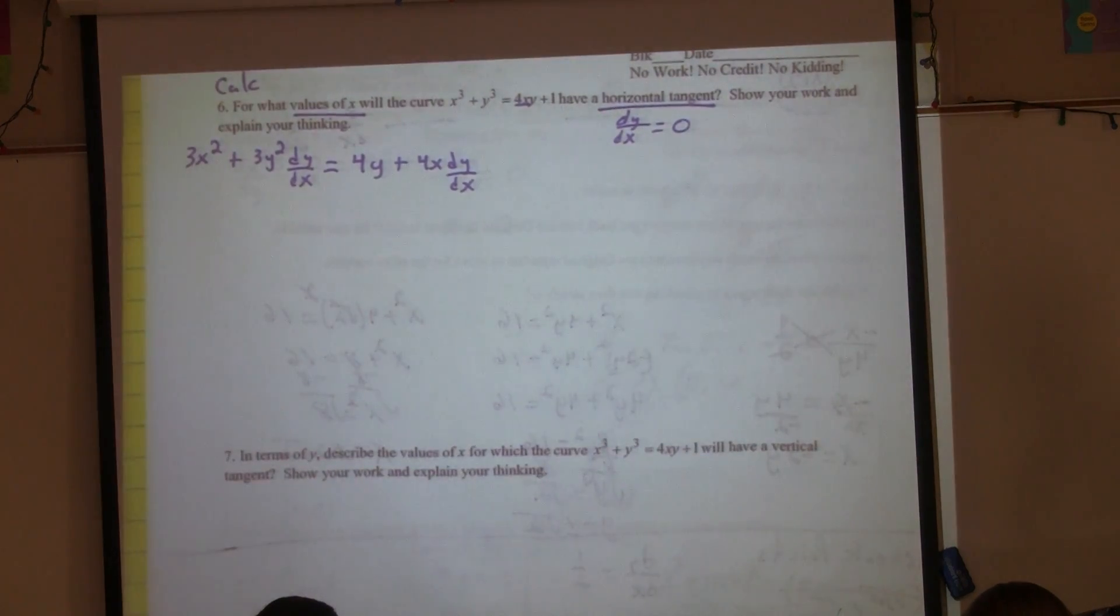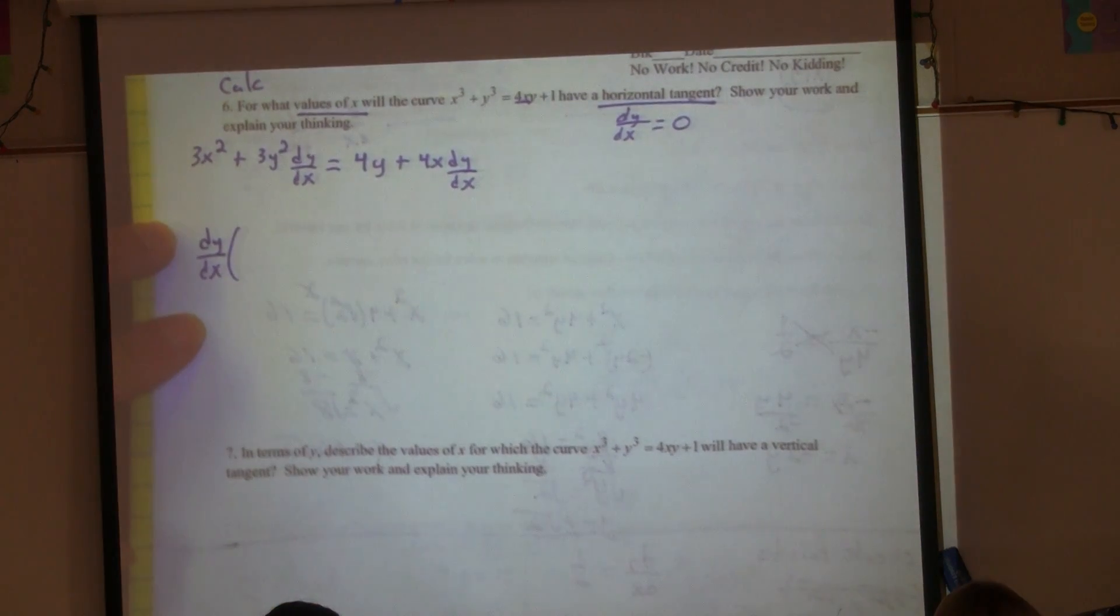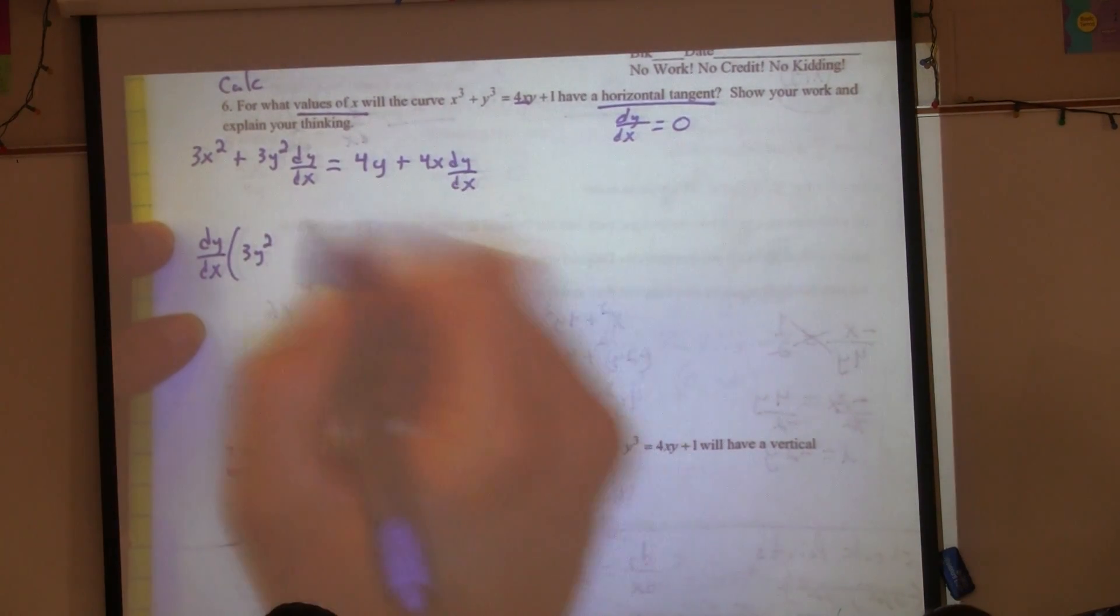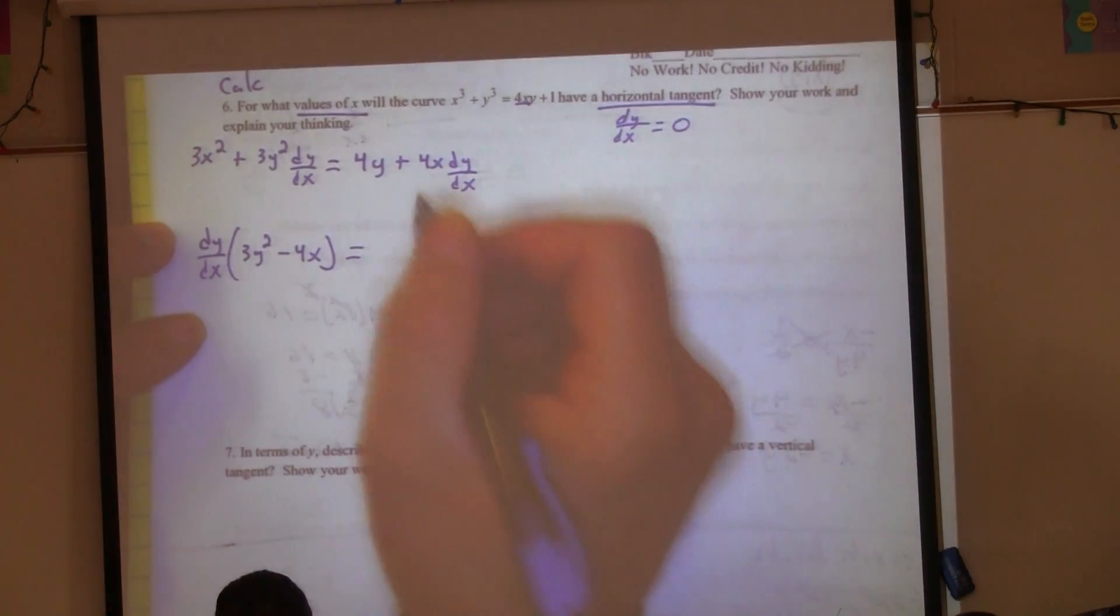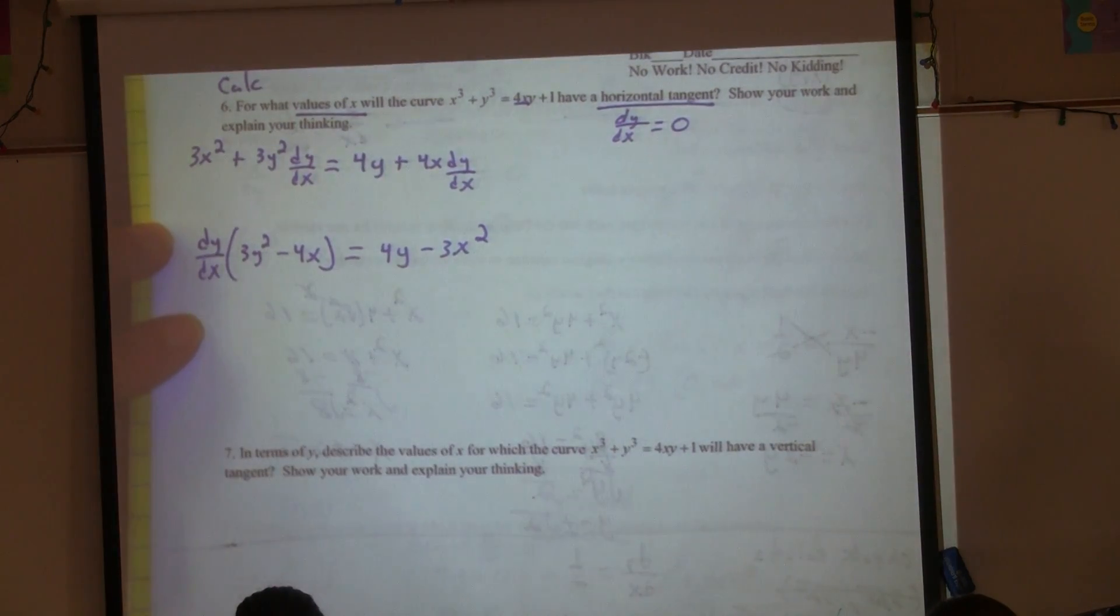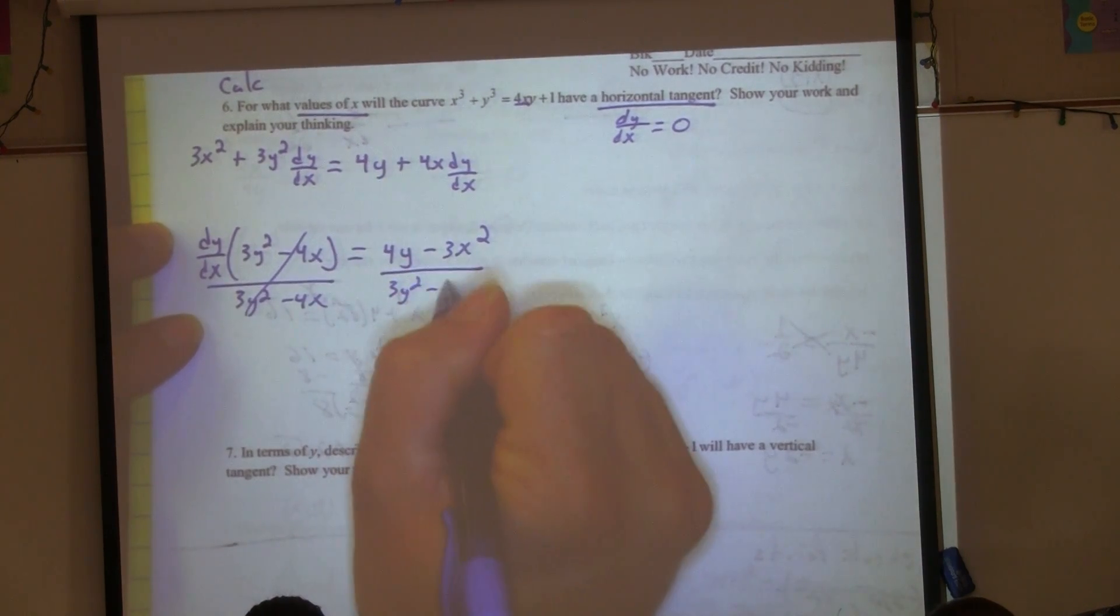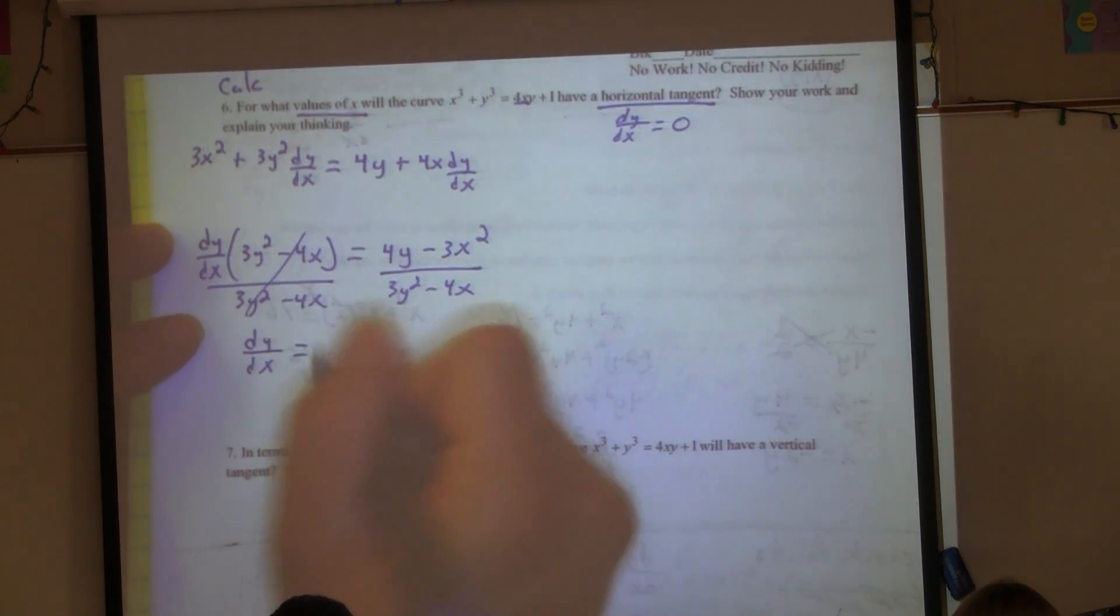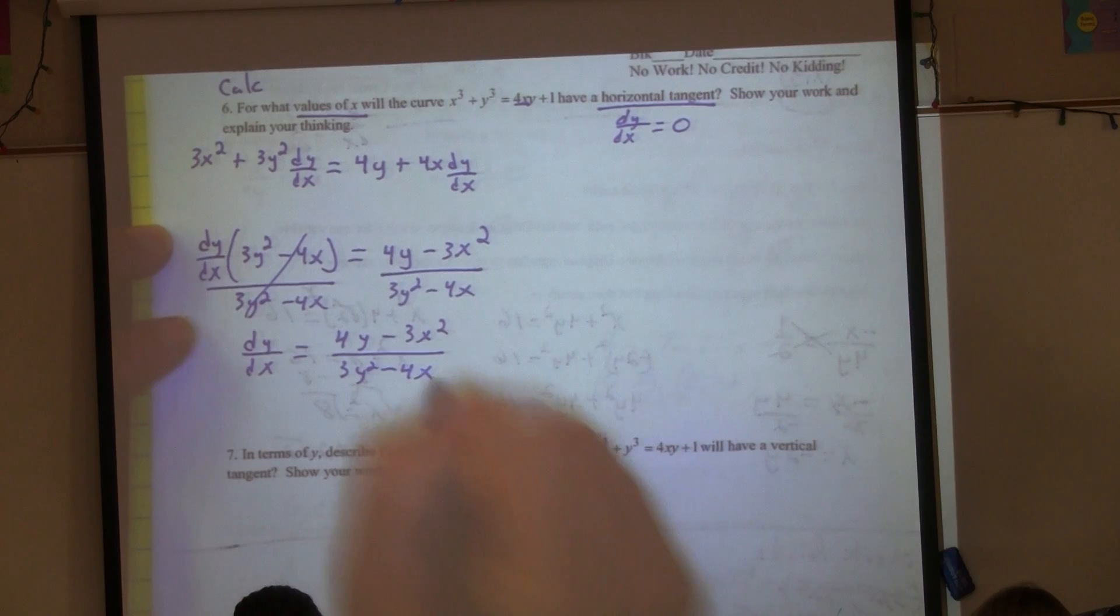When do I have a horizontal tangent line? When the derivative is equal to zero. Do we have the derivative? We can get it, because we're awesome. So let's get the derivative. That'll be easy. What is it? 3x² + 3y² dy/dx equals product rule. Derivative of the first, 4y, times the second plus the first, 4x, times the derivative of the second dy/dx plus 1? No. The derivative of 1 is 0. Can we do it all in one shot, or should I go step by step? One shot? So I'm going to take out a dy/dx, and what would have been left over? 3y² - 4x.